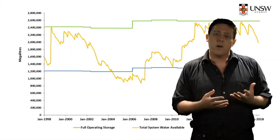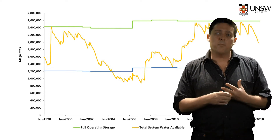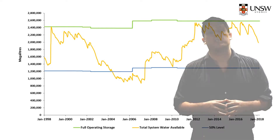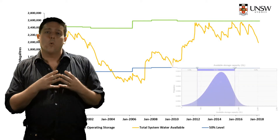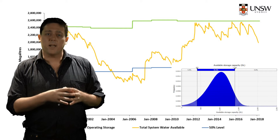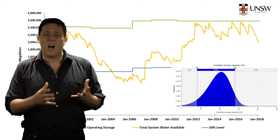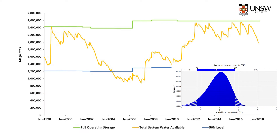All of these factors vary over time, so their state at any particular moment is largely a matter of chance. This chart shows how much water has been in the dam over a 20-year period. It also shows the full operating storage as the green line. We could use this information to produce a PDF for the reservoir volume available to capture inflows at any particular moment in time. We can see that such a PDF would range from 0 megalitres to around 1.5 million megalitres, and it might look something like this.